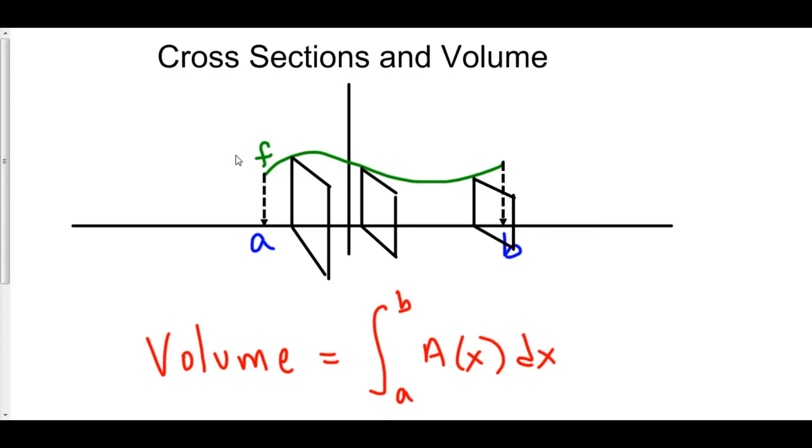Well, consider that we have an infinite number of areas, an infinite number of objects from a to b. How do you sum together an infinite number of areas? Well, with an integral. So, we're going to take the integral from a to b of the area of each of these different cross sections.